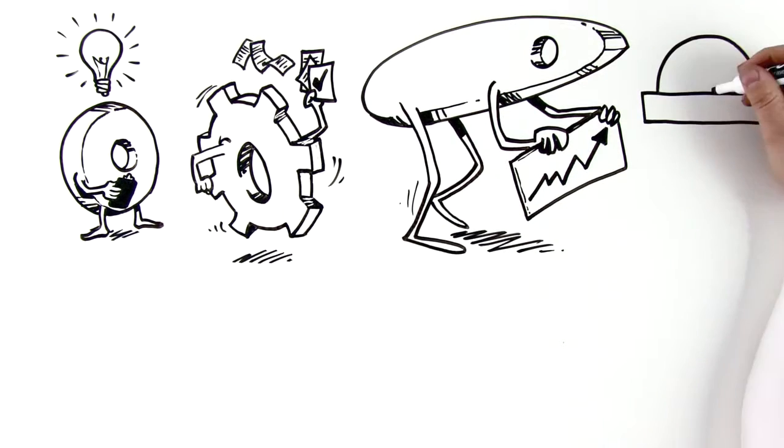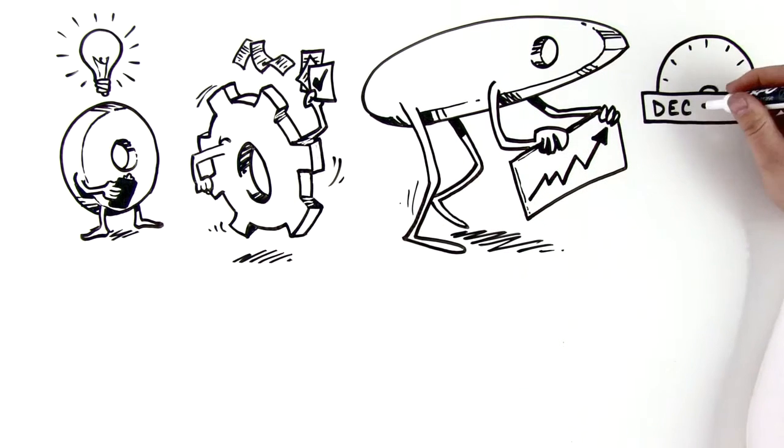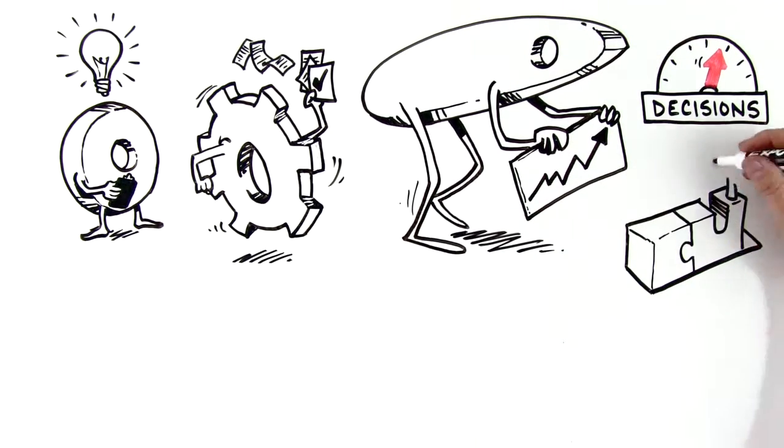How well these organizations perform are dependent on how fast they make good decisions in their environment. So how can we enable them to make great decisions fast?